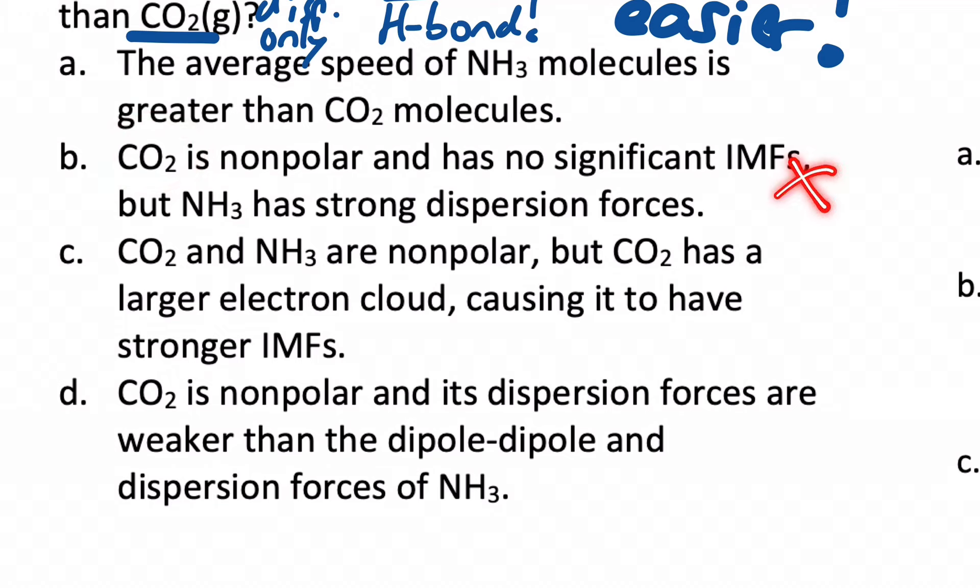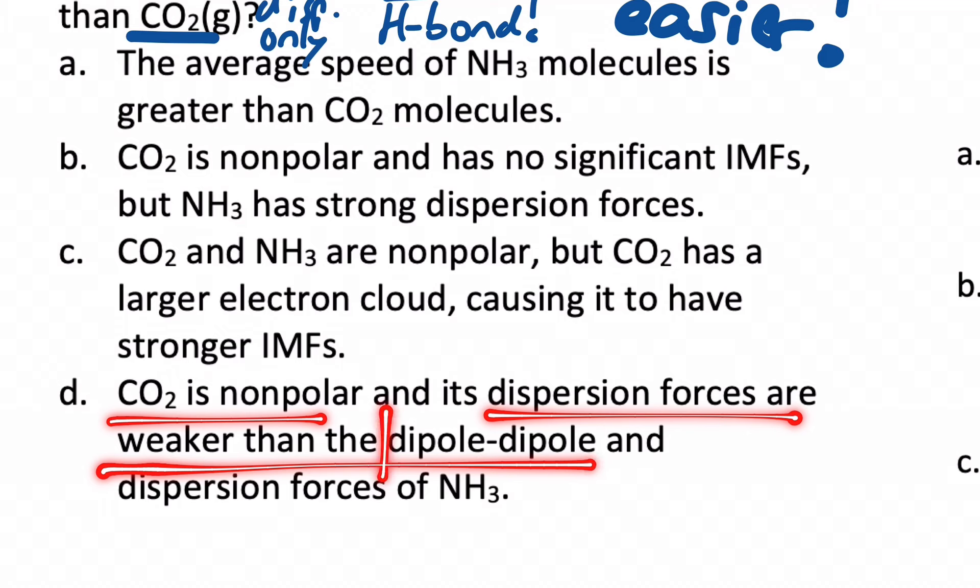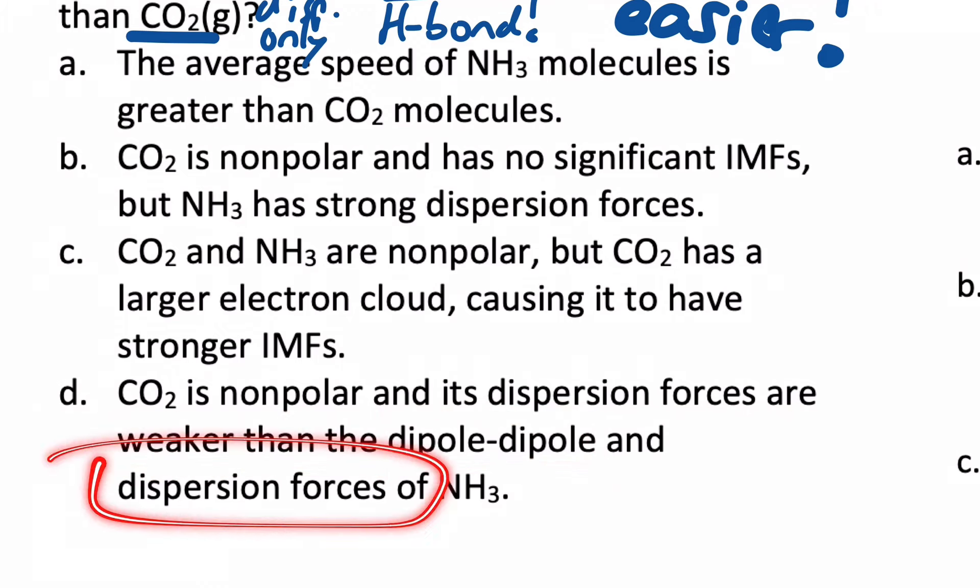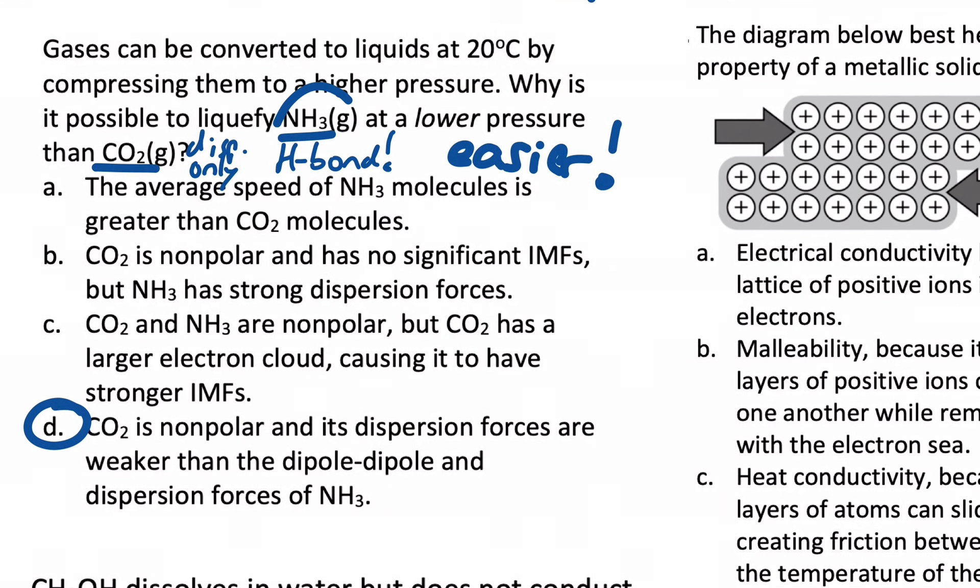CO2 and NH3 are non-polar already. That's an incorrect statement. Ammonia is polar. So C is incorrect. So it must be D. Let's check. CO2 is non-polar. Yup. And its dispersion forces are weaker than the dipole-dipole and dispersion forces of ammonia. That is the best answer to that question. They didn't even comment on the H-bonding in ammonia, but it's also there.